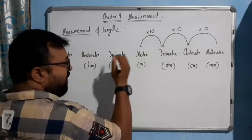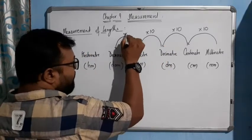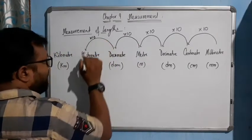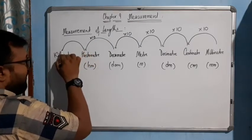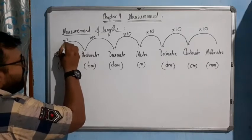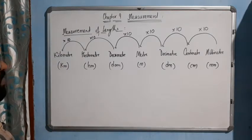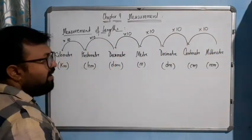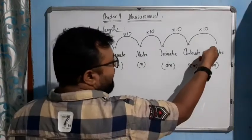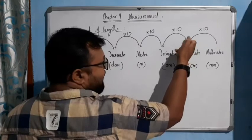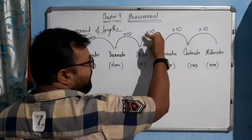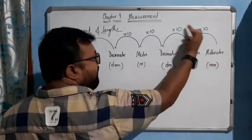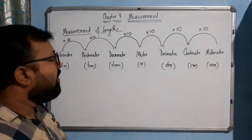10 decimeters gives you one meter. Continuing upward, 10 meters gives one decameter, 10 decameters gives one hectometer, and 10 hectometers gives one kilometer. So, going from millimeter to meter, that's three zeros — meaning 1000 millimeters gives you one meter directly.